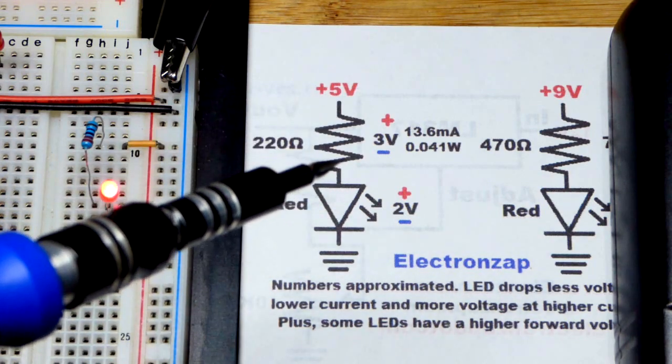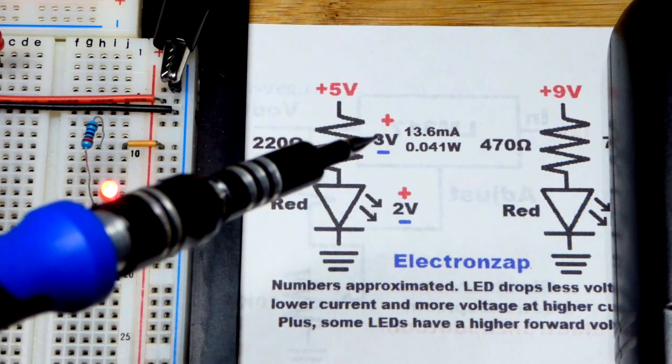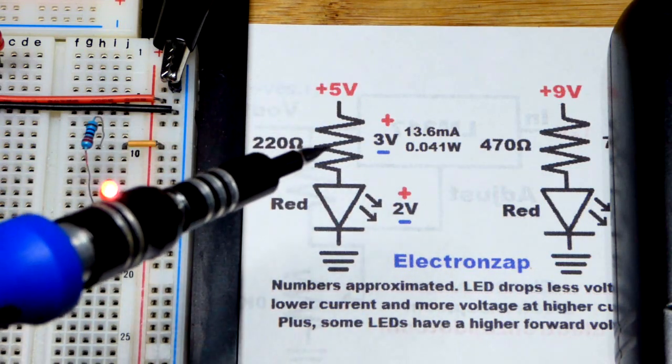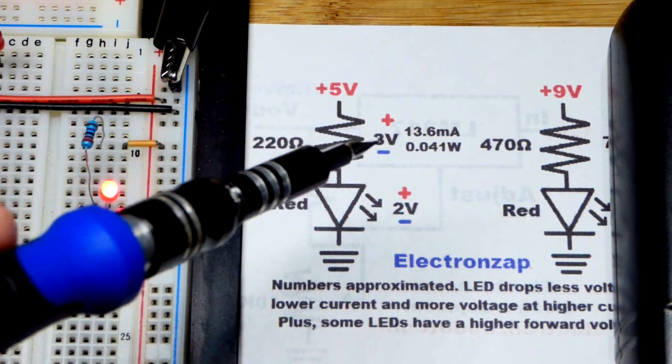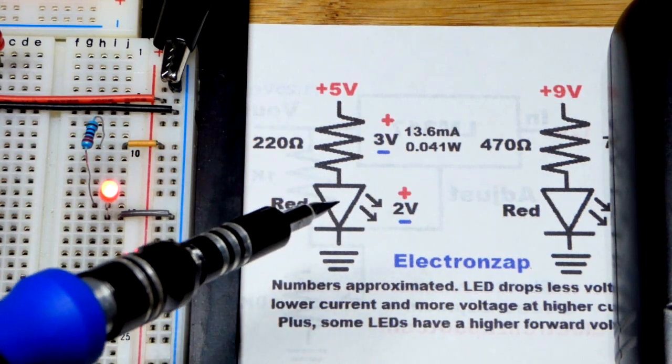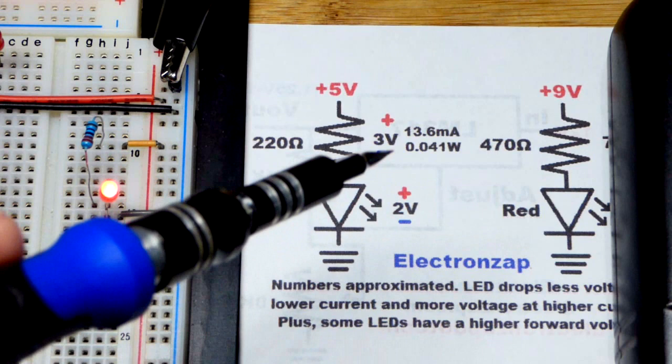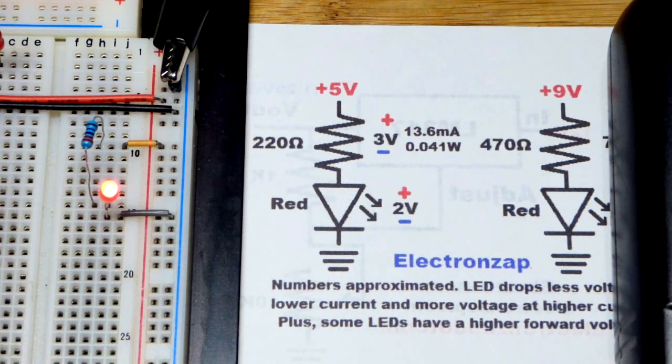Now the resistor sets the current, but that's based on the voltage across it. We're using a five volt power supply and the resistor is going to have about three volts across it because the LED is going to drop about two volts. These numbers are not exact, they're going to vary a bit, but it's going to be close.